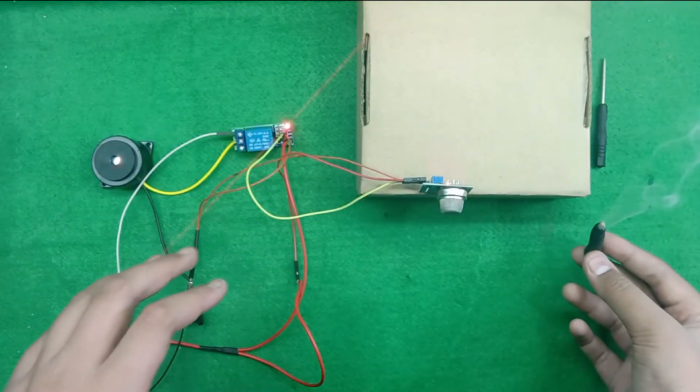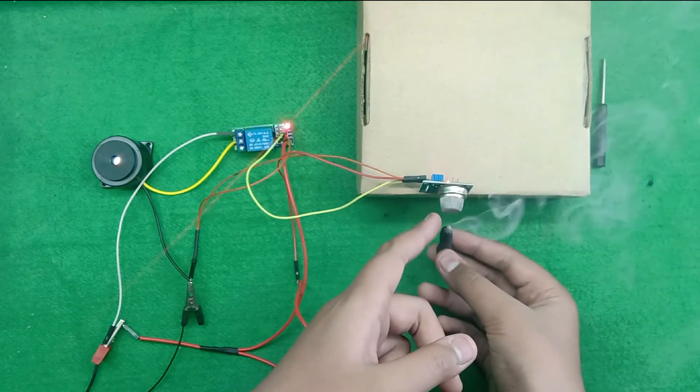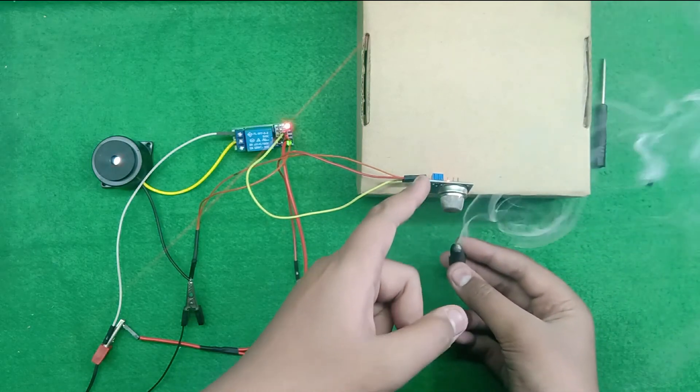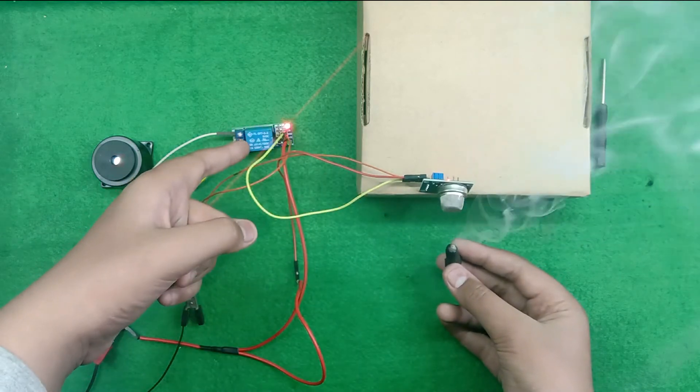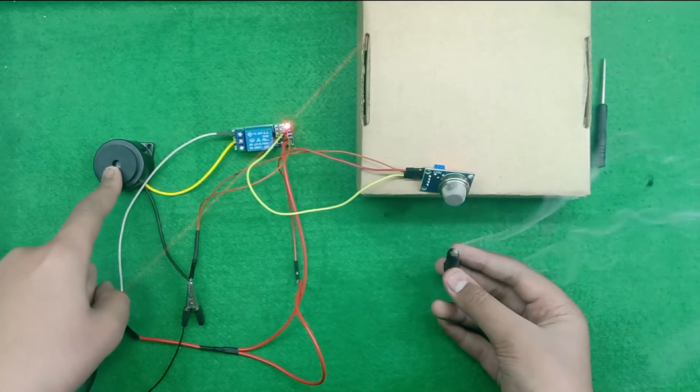This whole system works like this. When I place the smoke under the gas sensor, then it gets active and turns on our relay. Then, our relay automatically turns on our buzzer.